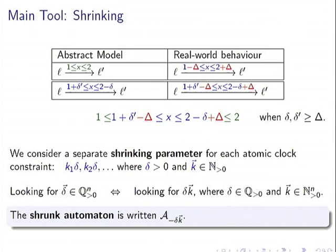We consider a separate shrinking parameter for each atomic clock constraint, so δ and δ' can differ. We look for parameters of the form: one rational δ multiplied by integers k₁, k₂, k₃, etc. This is equivalent to any set of rational numbers since any such set can be written as δ times positive integers. Given such a vector (δ, k), the shrunk automaton has each guard shrunk by the corresponding value.